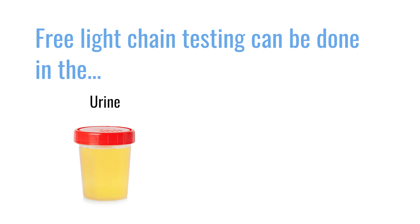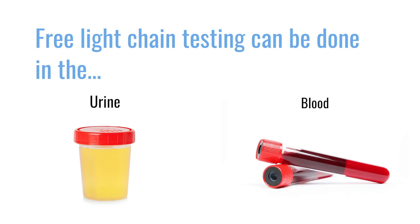The free light chain test has been available to myeloma doctors for the past 15 years or so. It can be done in the urine — urine free light chain — or in the blood, called serum free light chain. This is an important test that should be done every time somebody has myeloma, in combination with other blood markers like the SPEP, immunofixation, and quantitative immunoglobulins.